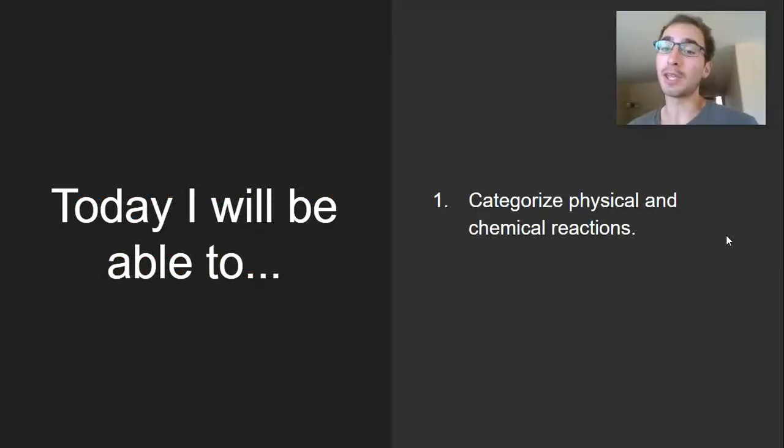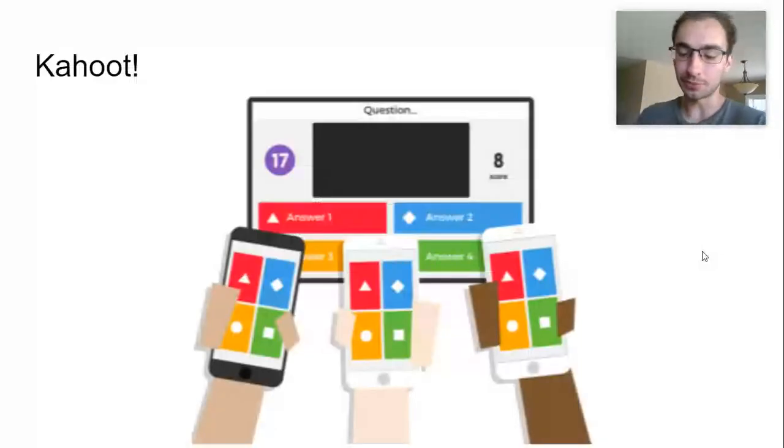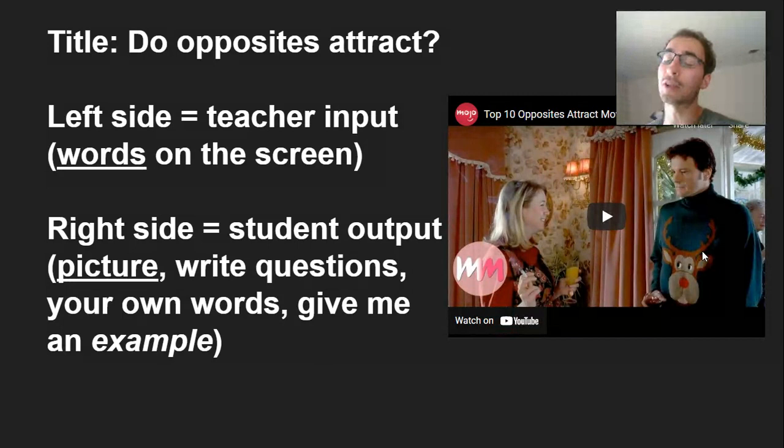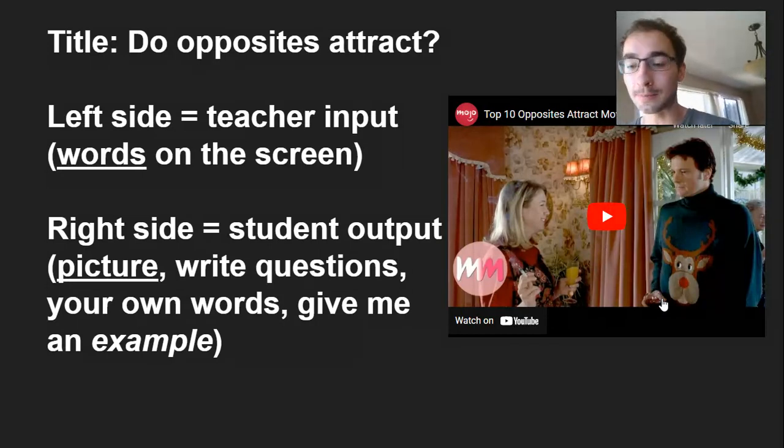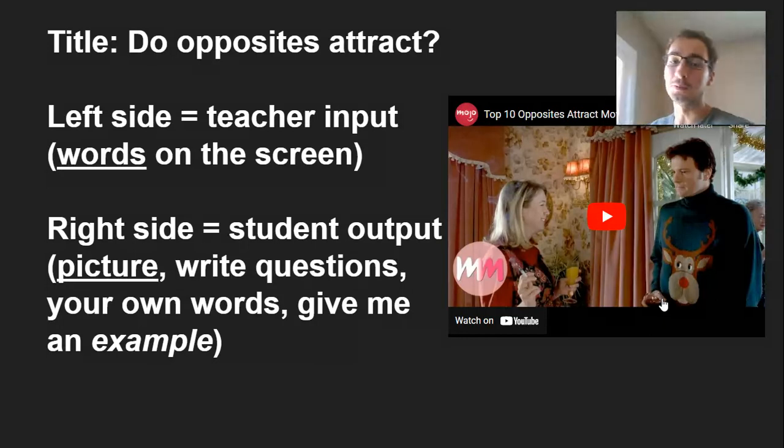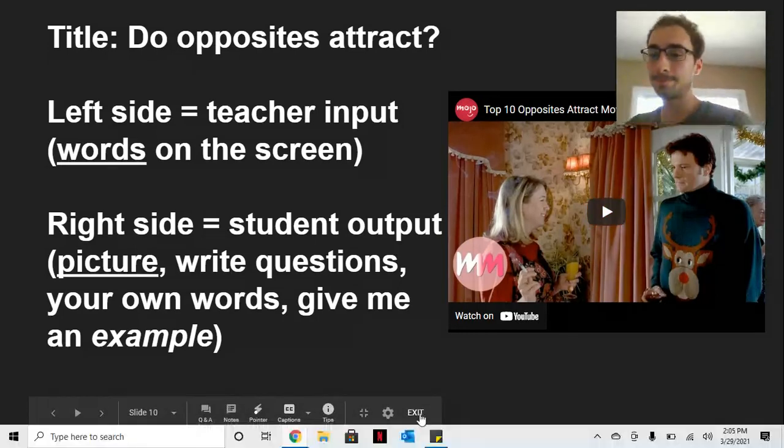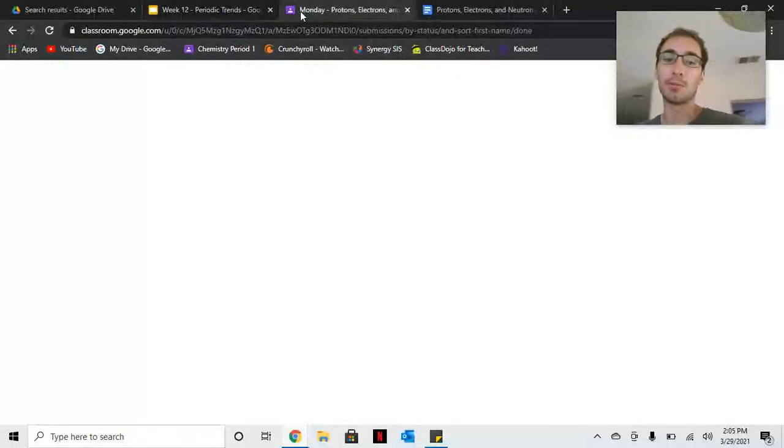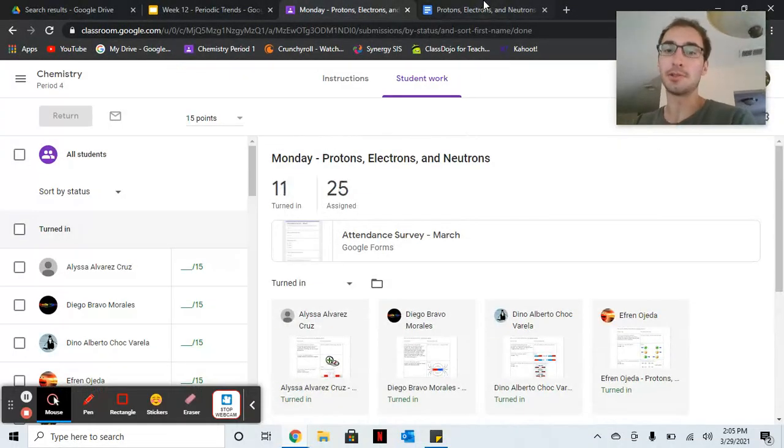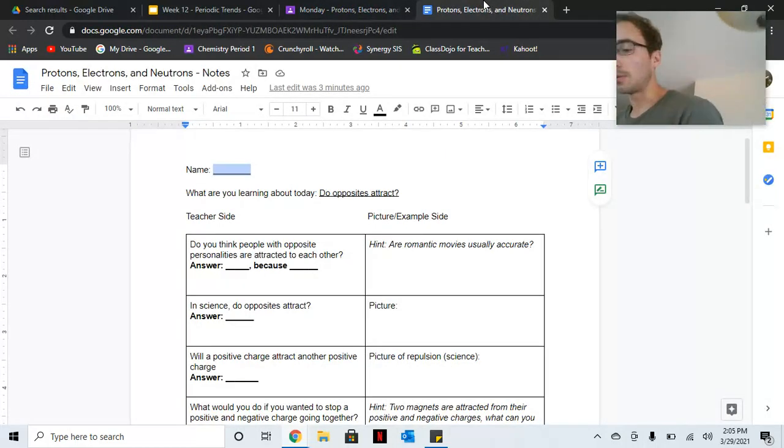So for example today, we did categorizing during the Kahoot, but for the rest of the day, you are going to learn if opposites attract. It's a very big thing in movies where two people are attracted to each other and fall in love, but they have completely different personalities. And you're going to learn about if that's true. So go to Monday, protons, electrons, and neutrons, and pull up this doc.